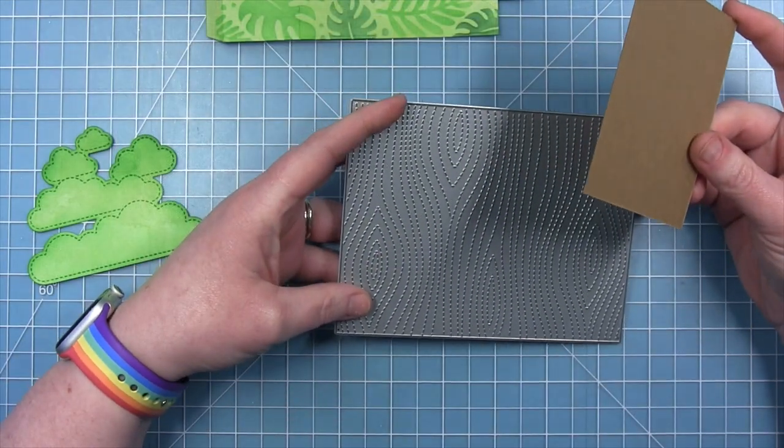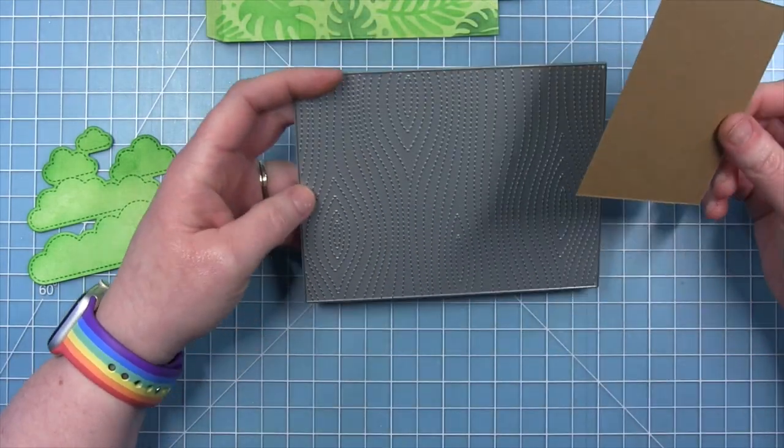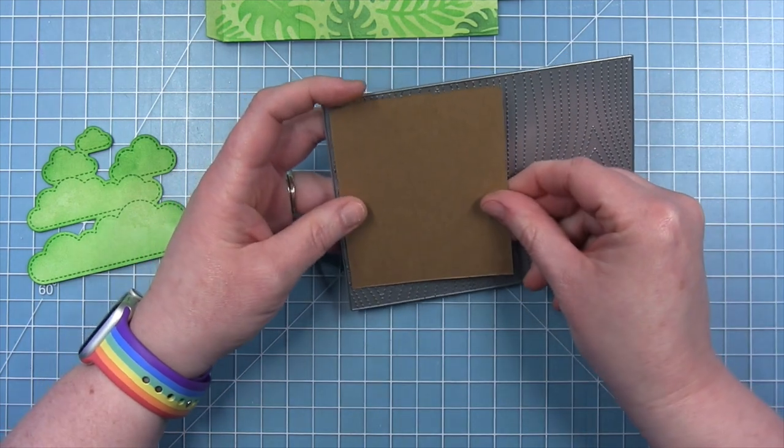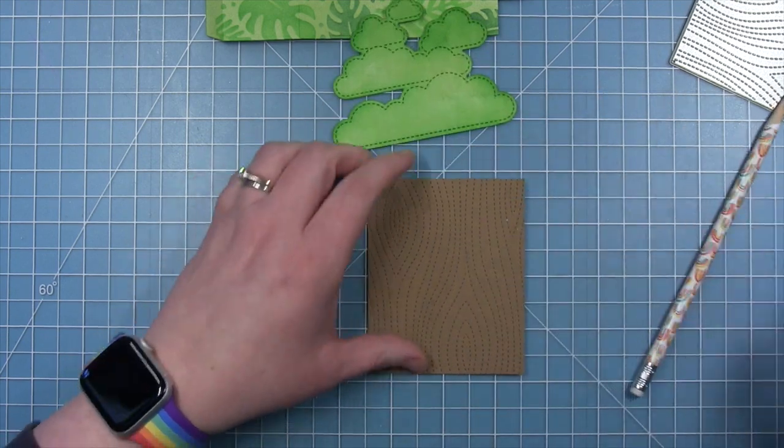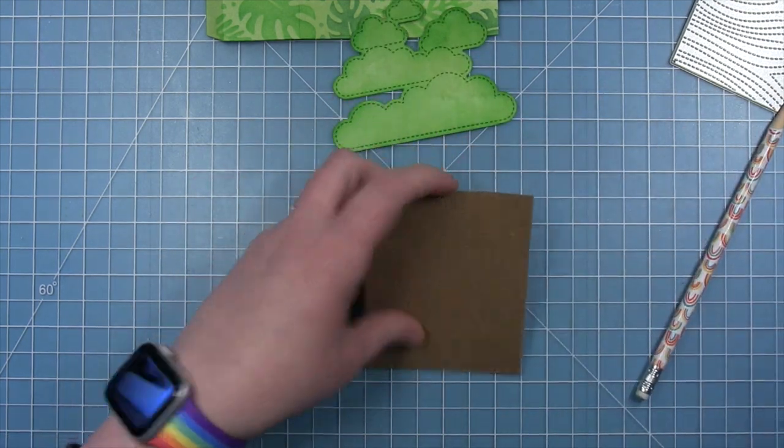Now for the trunk of the tree. This is kind of an abstract trunk of the tree. I'm using some paper bag cardstock and my stitched wood grain backdrop. And I've just cut a piece that's a lot bigger than what I need.